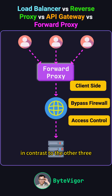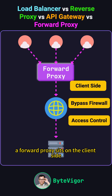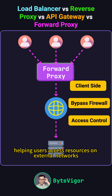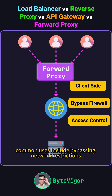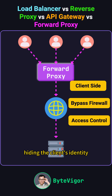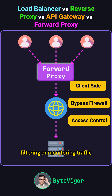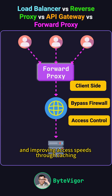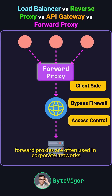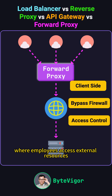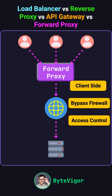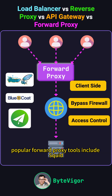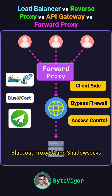In contrast to the other three, a forward proxy sits on the client side, helping users access resources on external networks. Common uses include bypassing network restrictions, hiding the client's identity, filtering or monitoring traffic, and improving access speeds through caching. Forward proxies are often used in corporate networks, where employees access external resources, or by individuals looking to access blocked websites. Popular forward proxy tools include Squid, Bluecoat Proxy SG, and Shadowsocks.